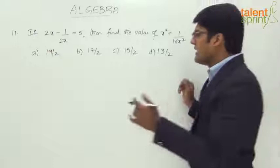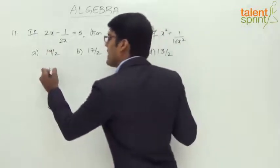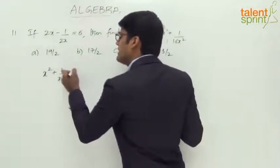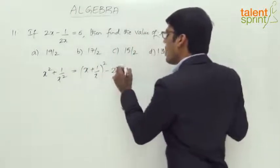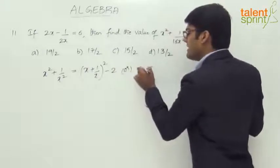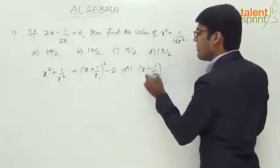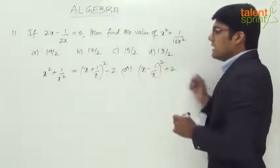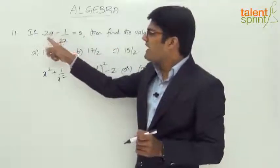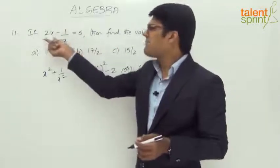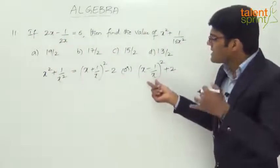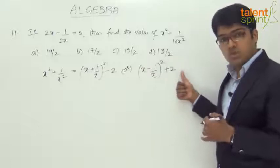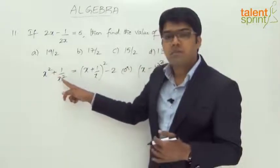Well, we all understand the point that x squared plus 1 by x squared can be taken as x plus 1 by x whole square minus 2, or it can be taken as x minus 1 by x whole square plus 2. Now the given equation here is in the form of x minus 1 by x. Instead of x we have got 2x. So 2x minus 1 by 2x equals 6. So we should take 2x minus 1 by 2x whole square plus 2 to get x squared plus 1 by x squared.